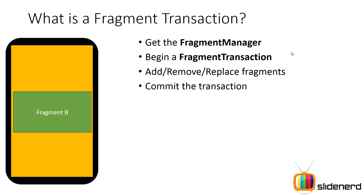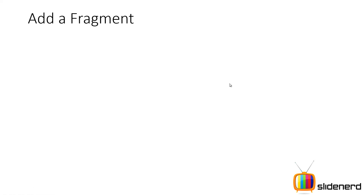That means add fragment A, remove fragment B, replace fragment C with fragment D — all three steps are considered a single operation. You add, you remove, you replace, and at the end when you commit the transaction, that's when you see all the changes on the screen. Otherwise it's not going to happen.